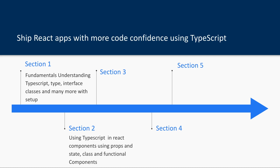We will talk about using TypeScript in components — how to set props. Earlier we were using PropTypes to say this component will receive these props of type string, boolean, or function, but that was not doing a compile-time check — it was checking at runtime. With TypeScript, we do all those checks at compile time, meaning when you run the tsc TypeScript compiler command, instead of when your application is running with npm run start in the browser.